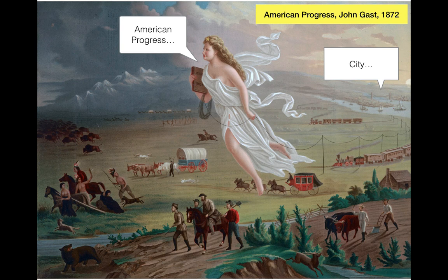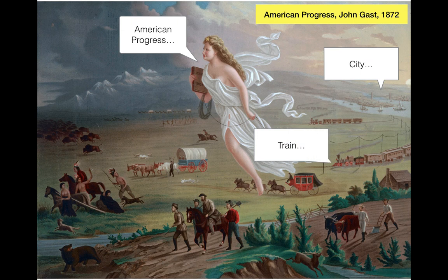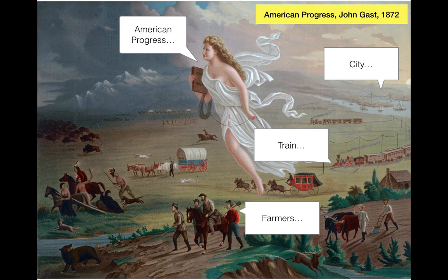Transportation and communication are the two major technologies here that are a symbol of American progress — the railroad and the telegraph. You can also see that she's carrying a school book, so we also want to bring education, especially to the native peoples that we are conquering. We also have the farmers who have historically gotten the short end of the stick in our history, but are also the frontier. They expand, bring development, and cultivate the land, and are always the initiators of that progress in America, but almost always overcome by the city and industry.